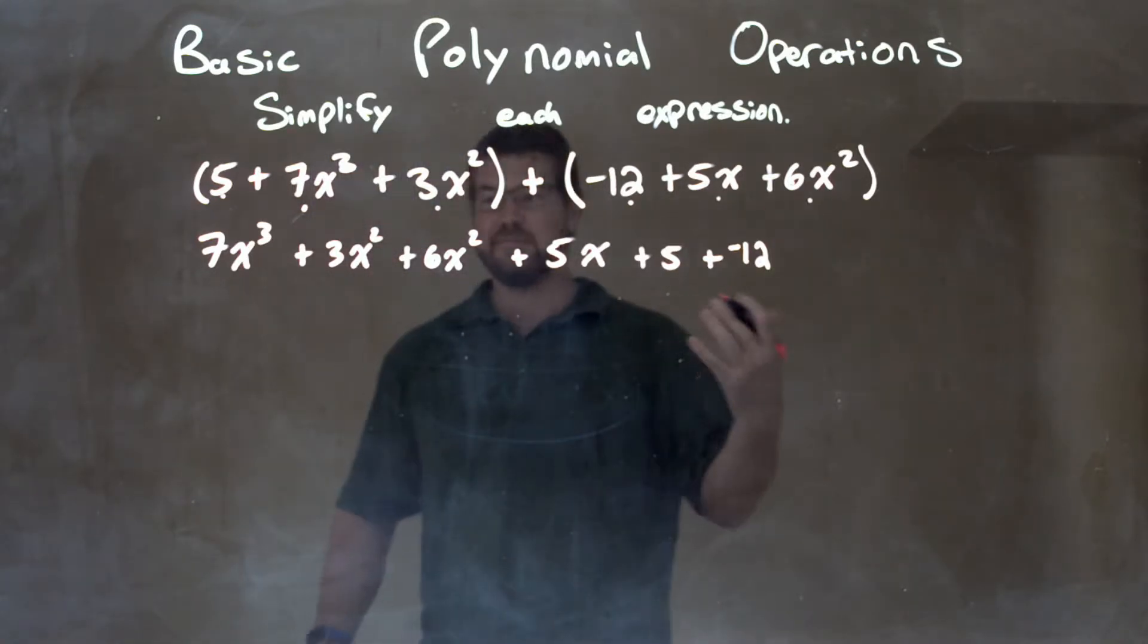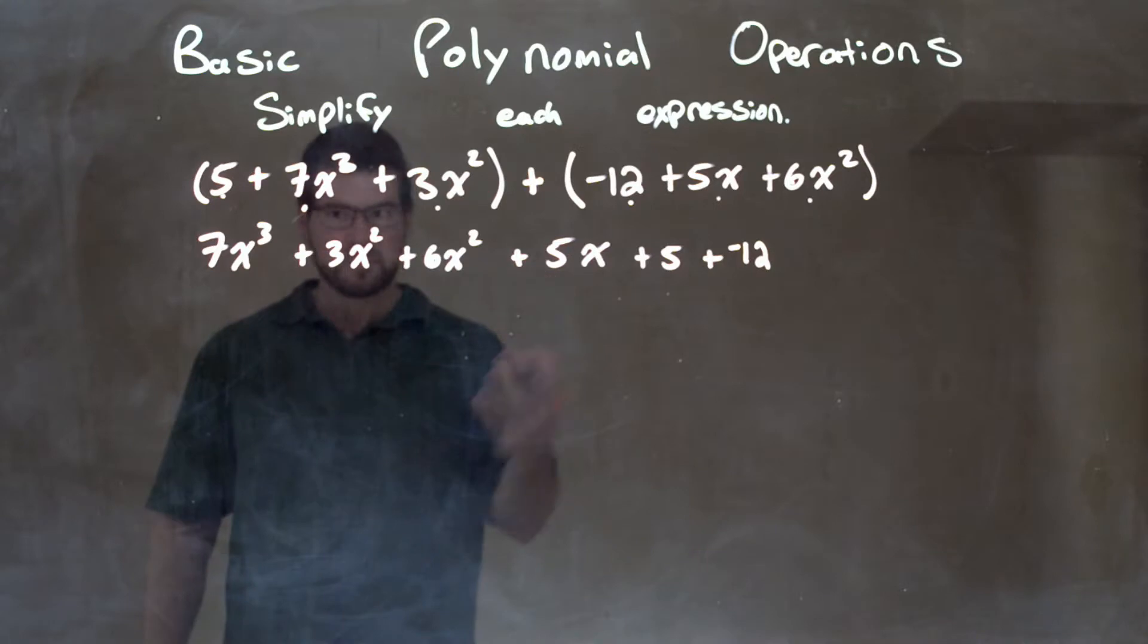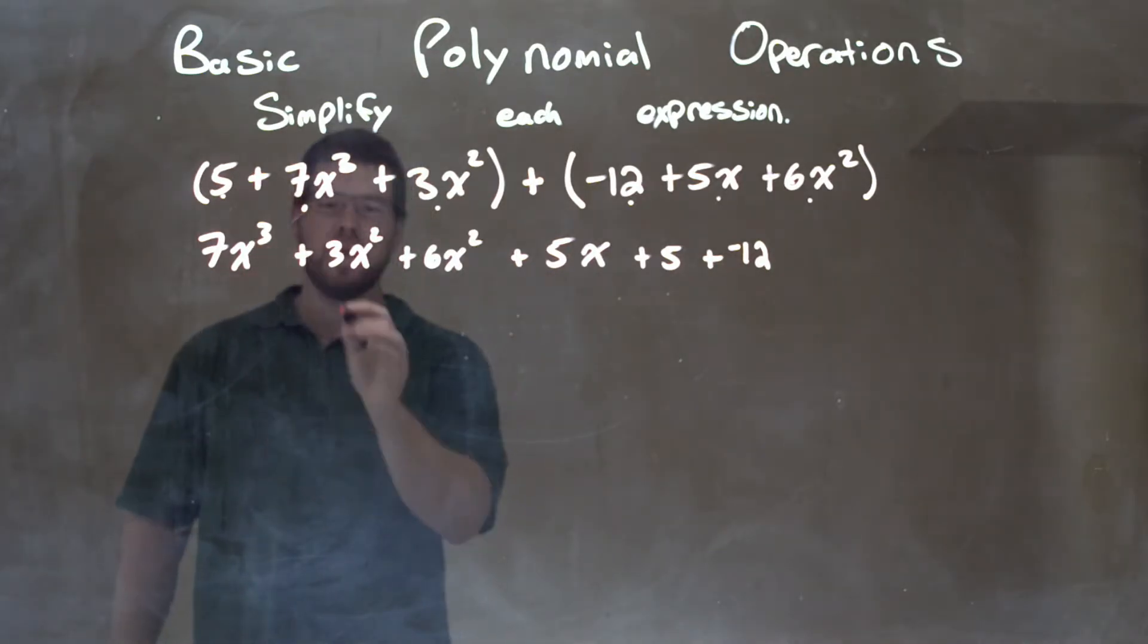So now I just have to simplify. Well, there's nothing x to the third power besides the first one, so we just bring down the 7x to the third. We're good.